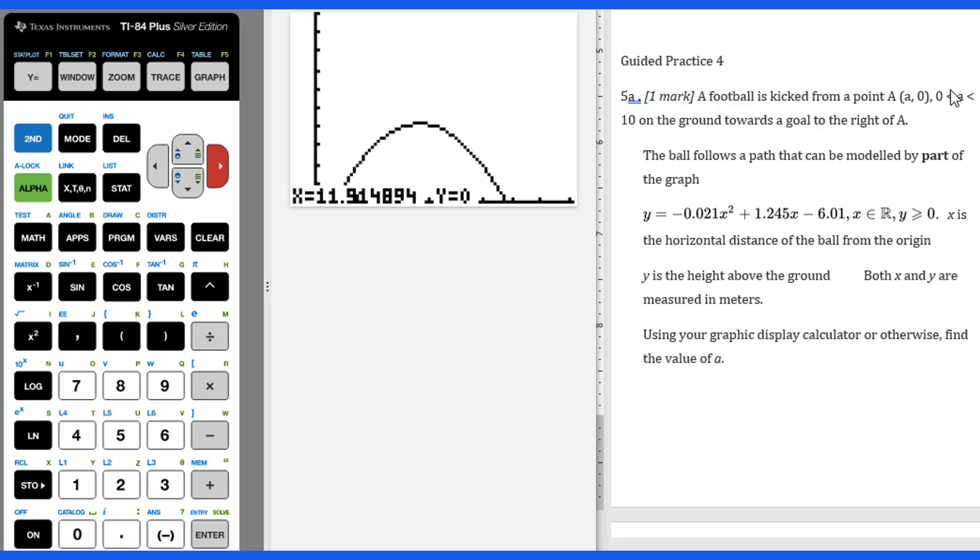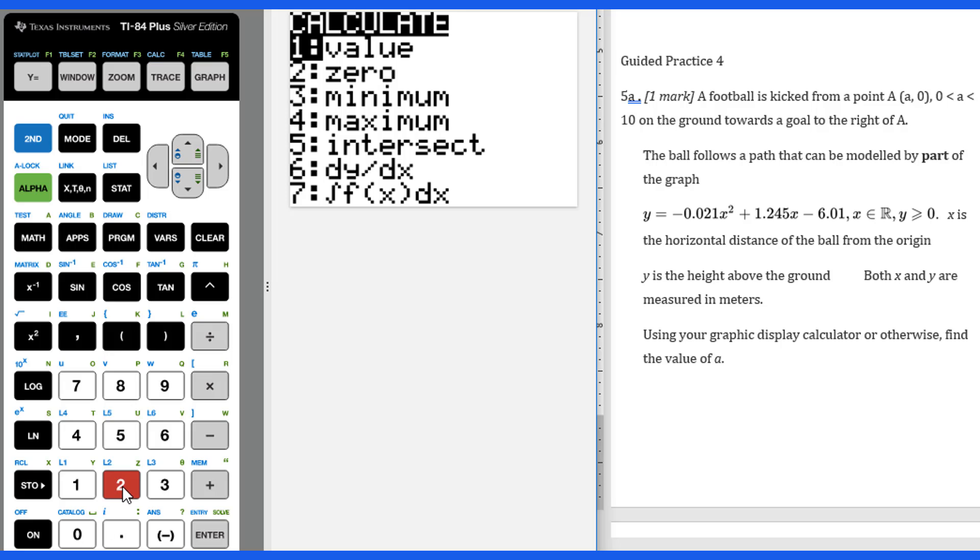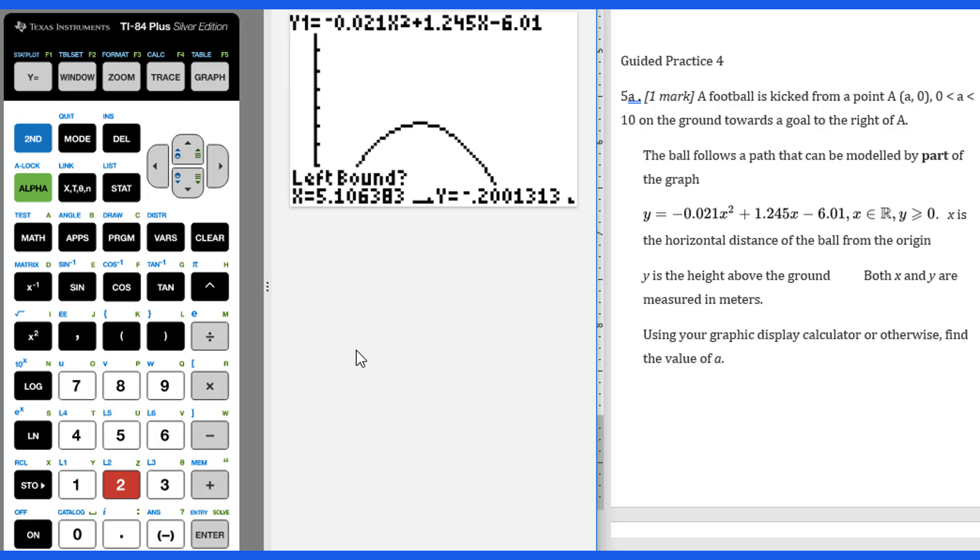After we get this graph, we're looking for this (a, 0). So we go to second trace, zero. For the left bound, you can put 0, enter. The right bound, you can move over here, that's here. So enter, then enter. You will get 5.30, 0. That will be (a, 0). That will be the a.